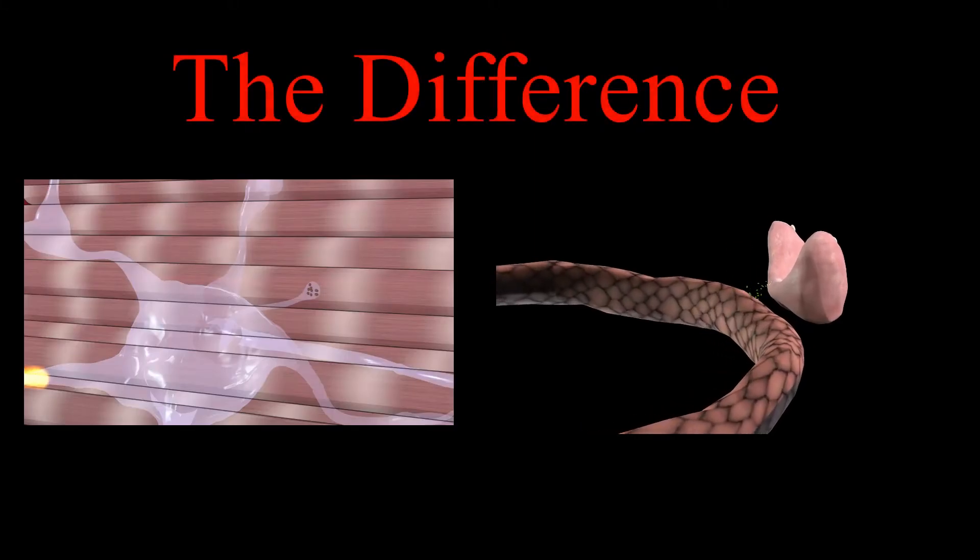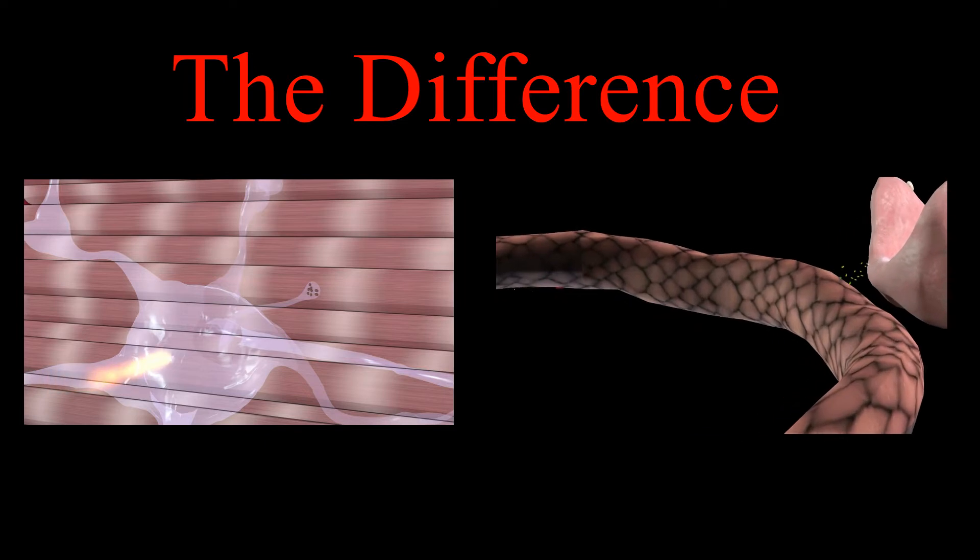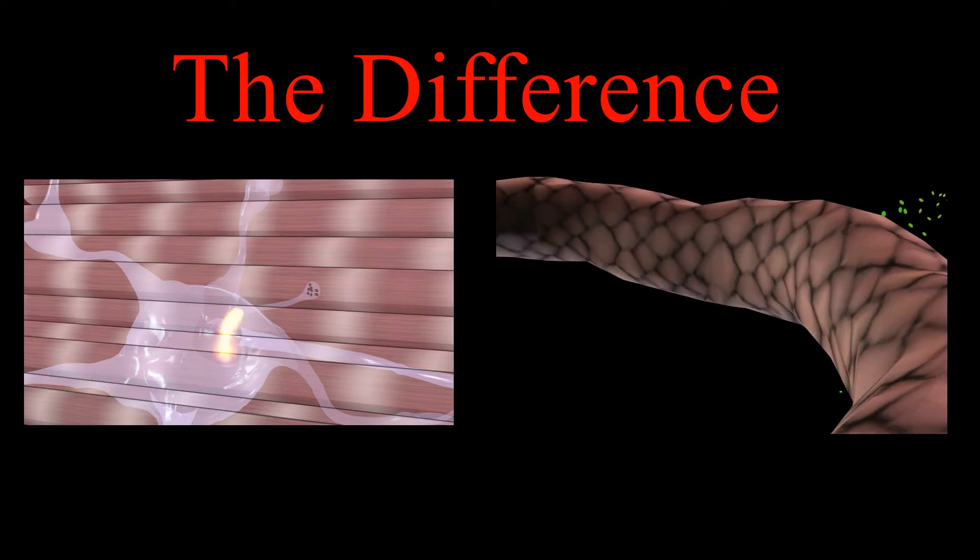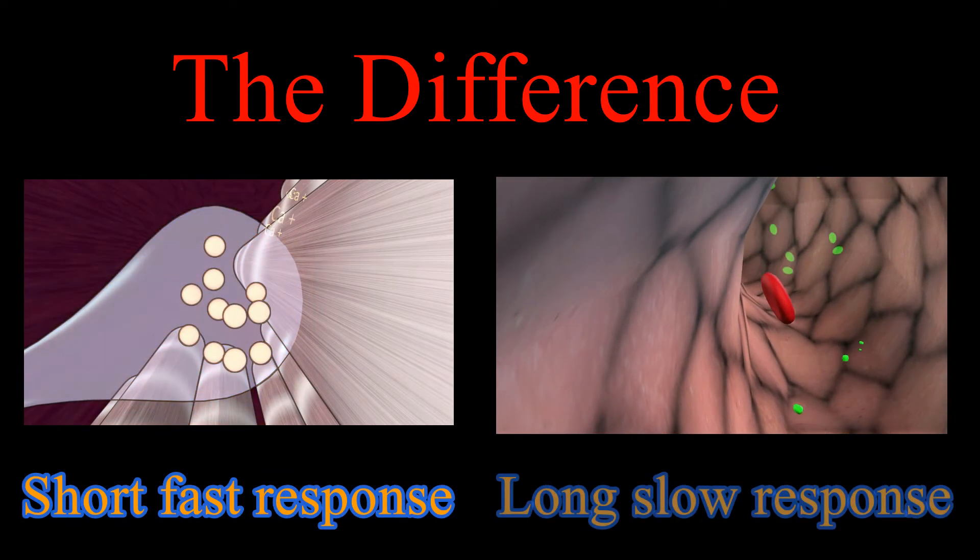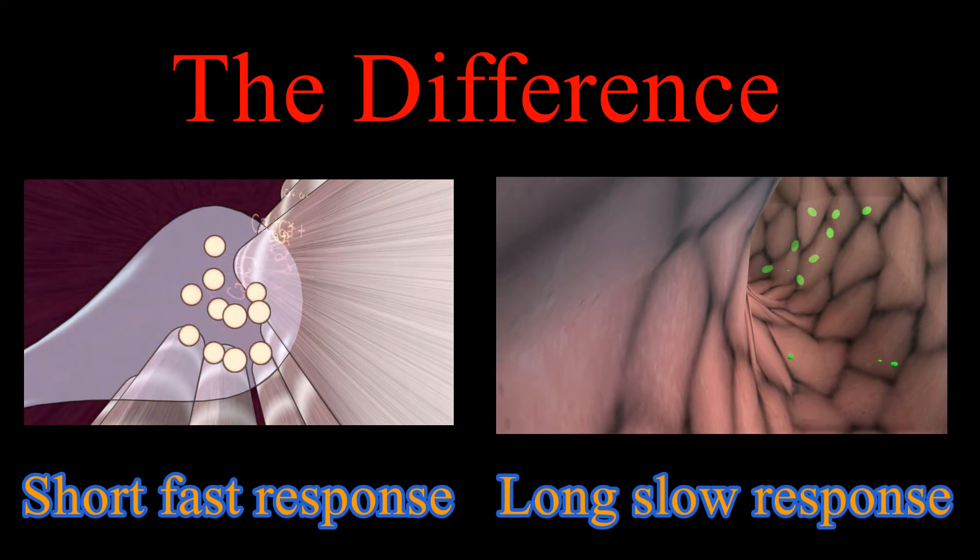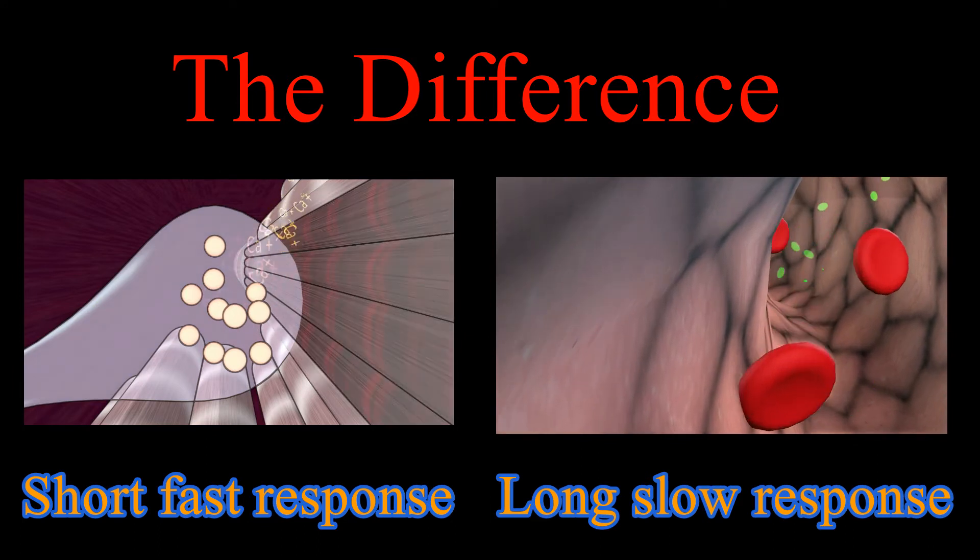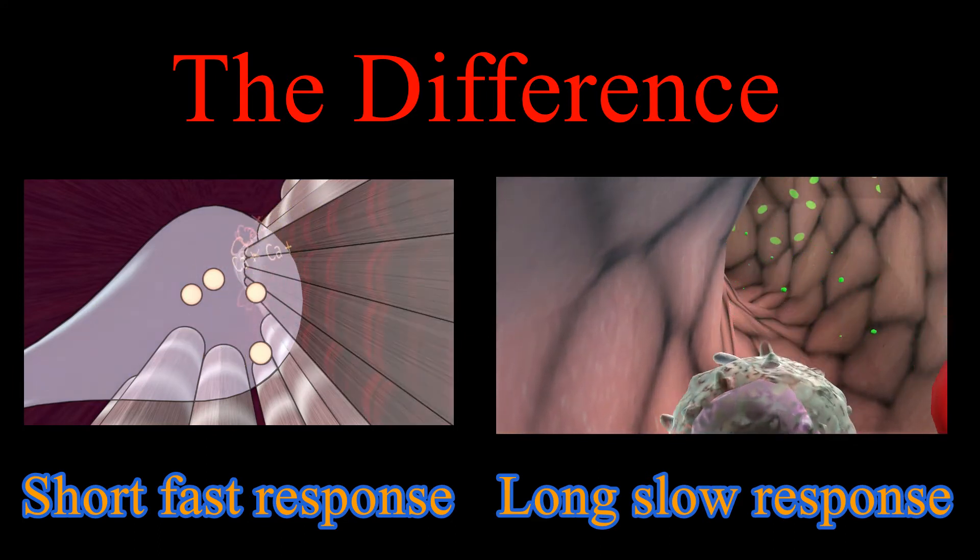So the main difference between endocrine system and nervous system: the nervous system has short fast response, while the endocrine system has long slow response. But at the end the two systems complete each other to maintain homeostasis in the internal environment of the body.